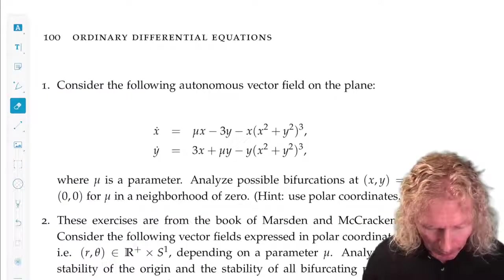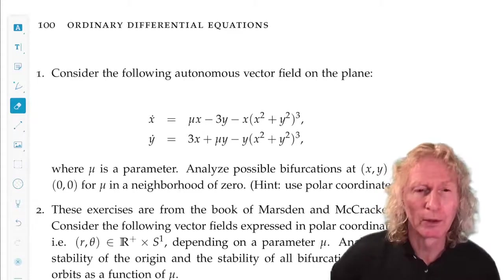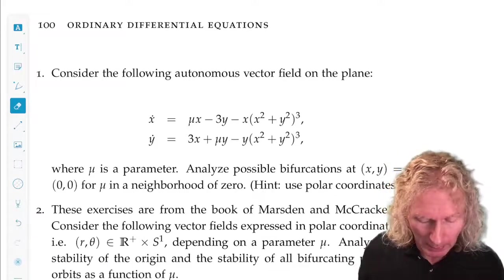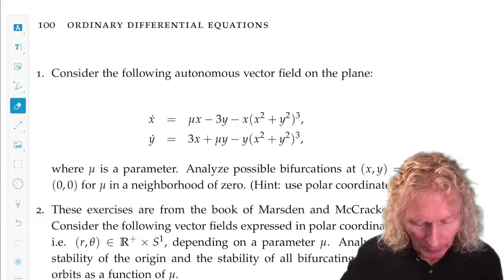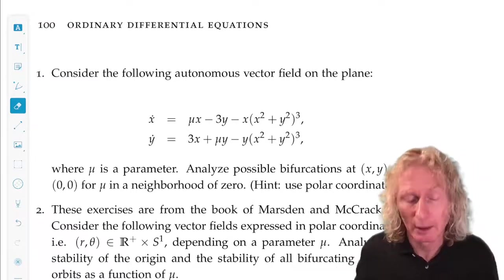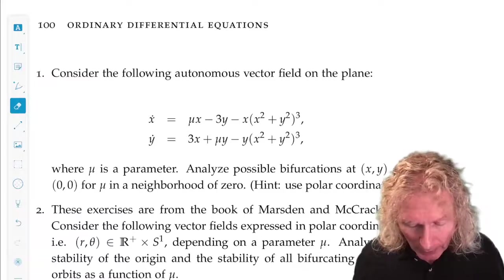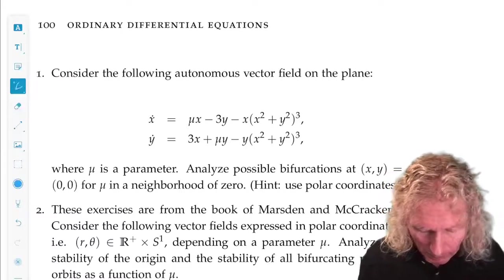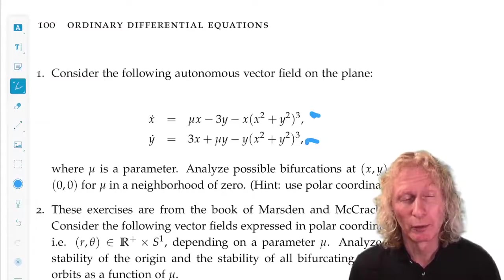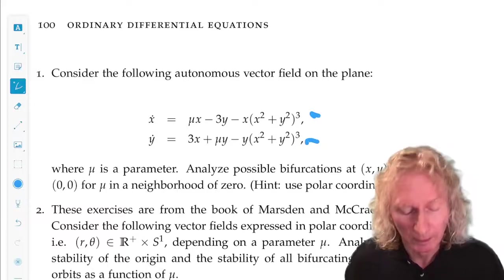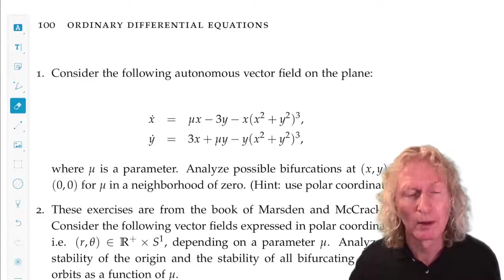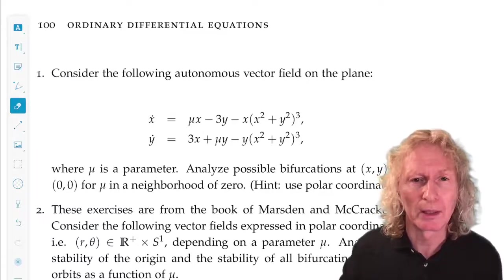The first one proceeds in a way similar to how we analyze the Hopf bifurcation model problem in this chapter. So x dot is mu x minus 3y, y dot is 3x plus mu y, and then we have nonlinear terms. We have that provocative x squared plus y squared term, but now it's cubed. Okay, so proceed in the same way and see what you come up with. Do the same type of analysis that I did in the chapter.